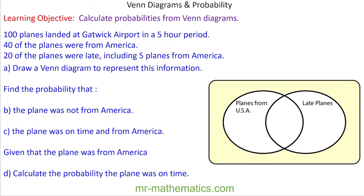Now try this question: 100 planes landed at Gatwick airport in a five-hour period. 40 of the planes were from America. 20 of the planes were late, including 5 planes from America. Can you draw the Venn diagram to represent this information? Pause the video and resume when you're ready.